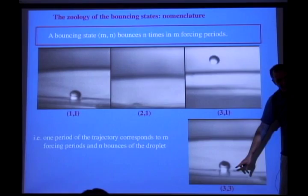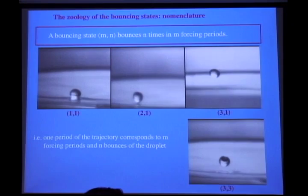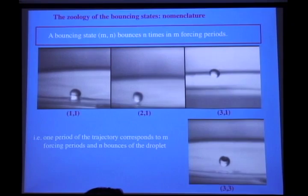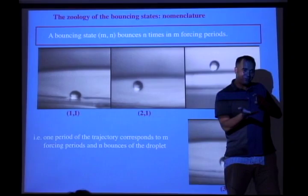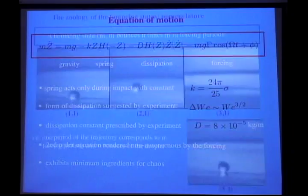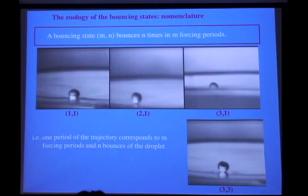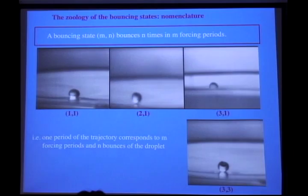How do you experimentally select one of those three solutions? It depends on the phase. Which of these solutions you get depends on when it hits the film. If it hits the film when the film is coming down, it gets a little kick. If it hits the film when the film is coming up, it gets a big kick. So there are going to be different periodic solutions depending on phase of impact for the same forcing. But the nice thing is, we have the equation of motion, so we can describe this system exactly.